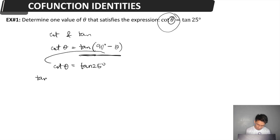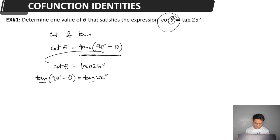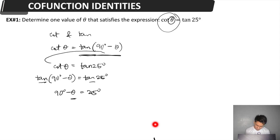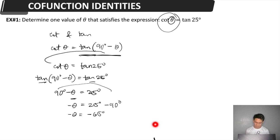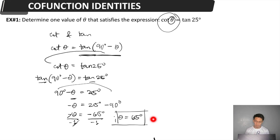Applying the identity, we have tangent(90° − θ) = tangent 25°. Since the angle measures are equal, we can drop the tangent function from both sides: 90° − θ = 25°. We can now solve for theta by rearranging: negative θ = 25° − 90°, which gives negative θ = −65°. Dividing both sides by −1, theta = 65°. This is one value of our theta for the given expression.